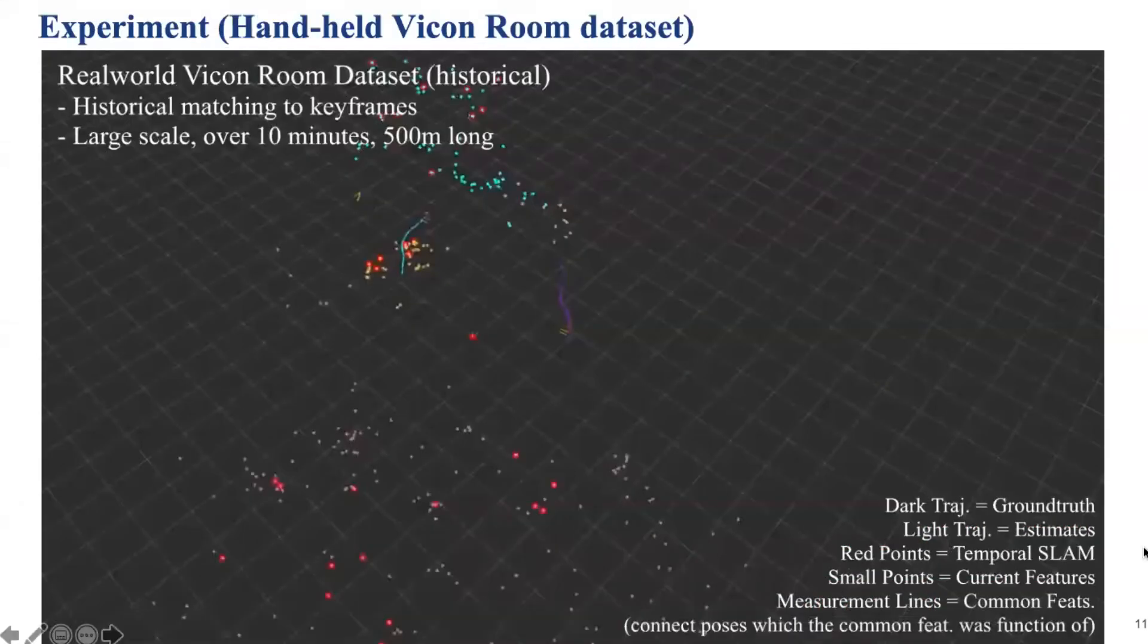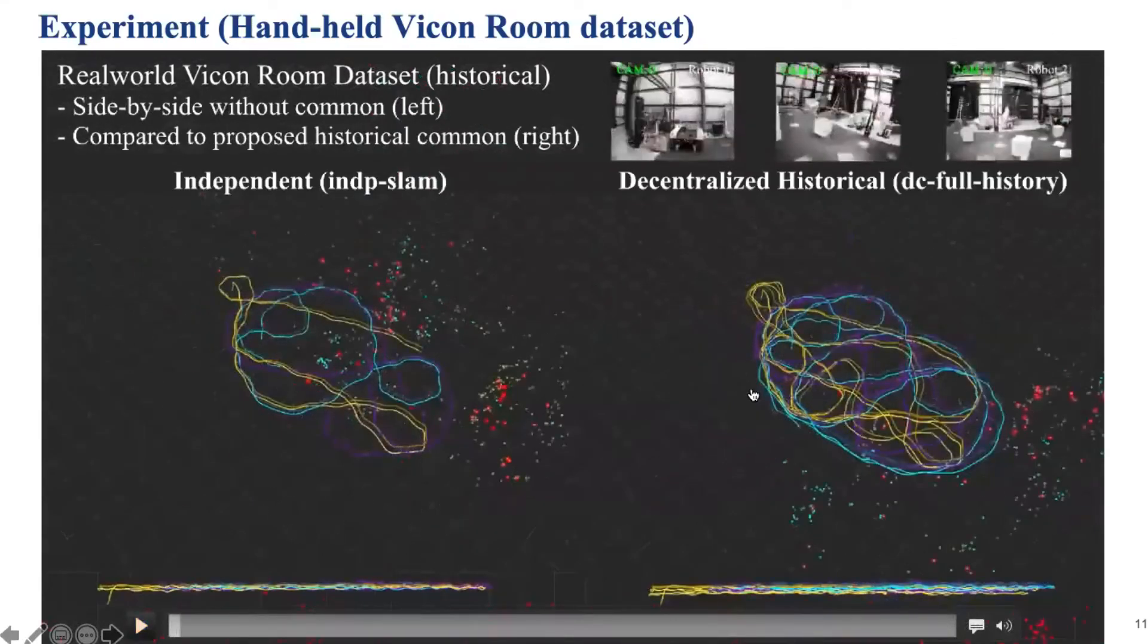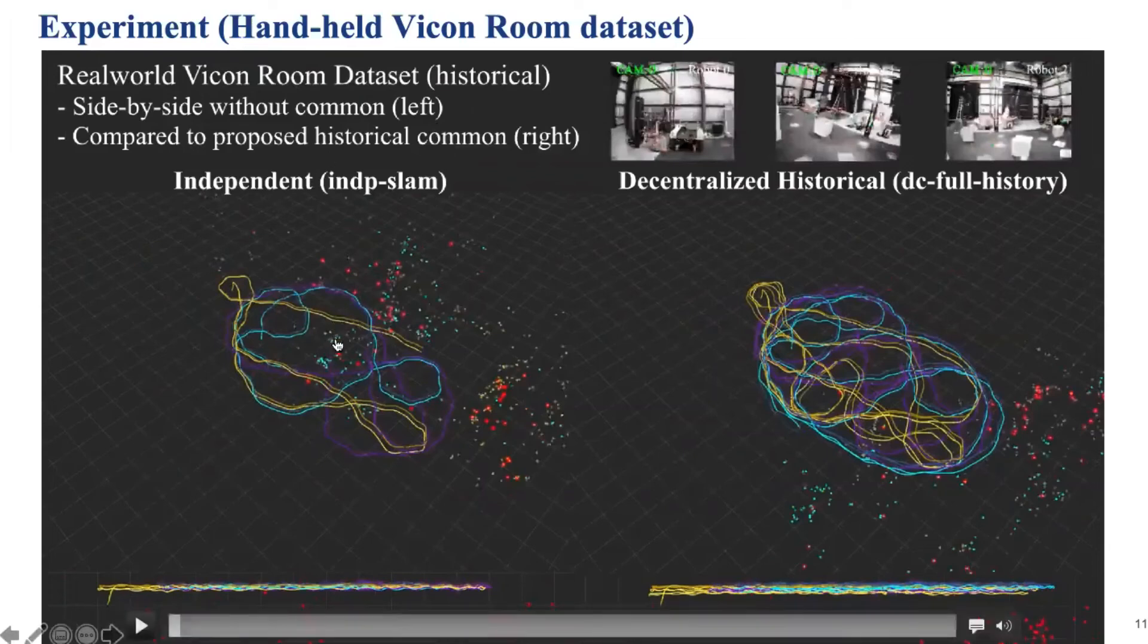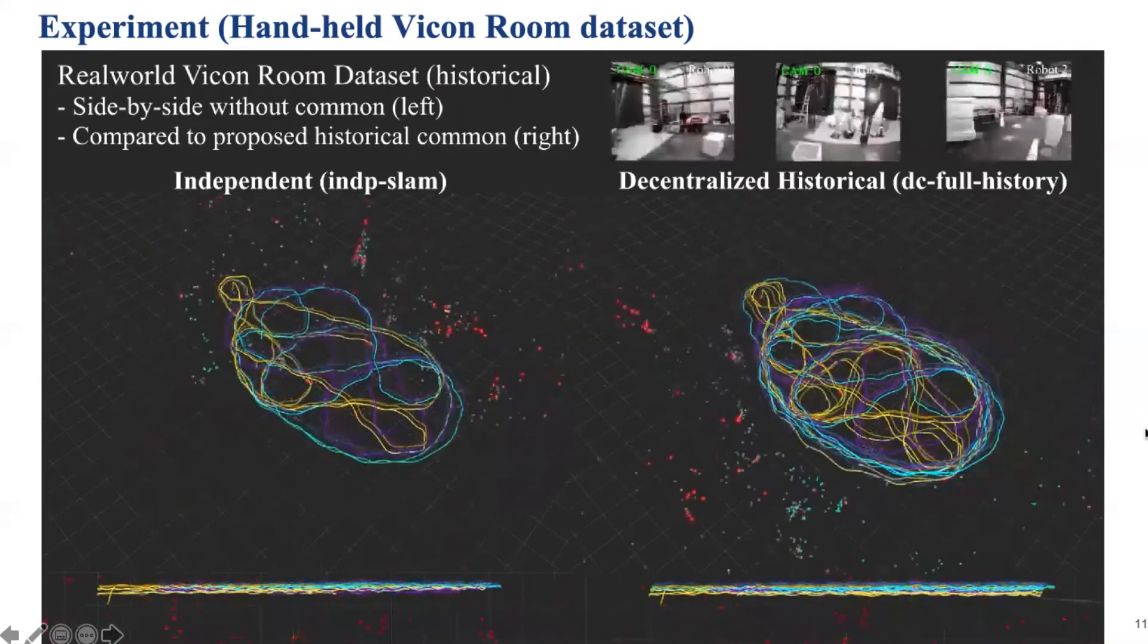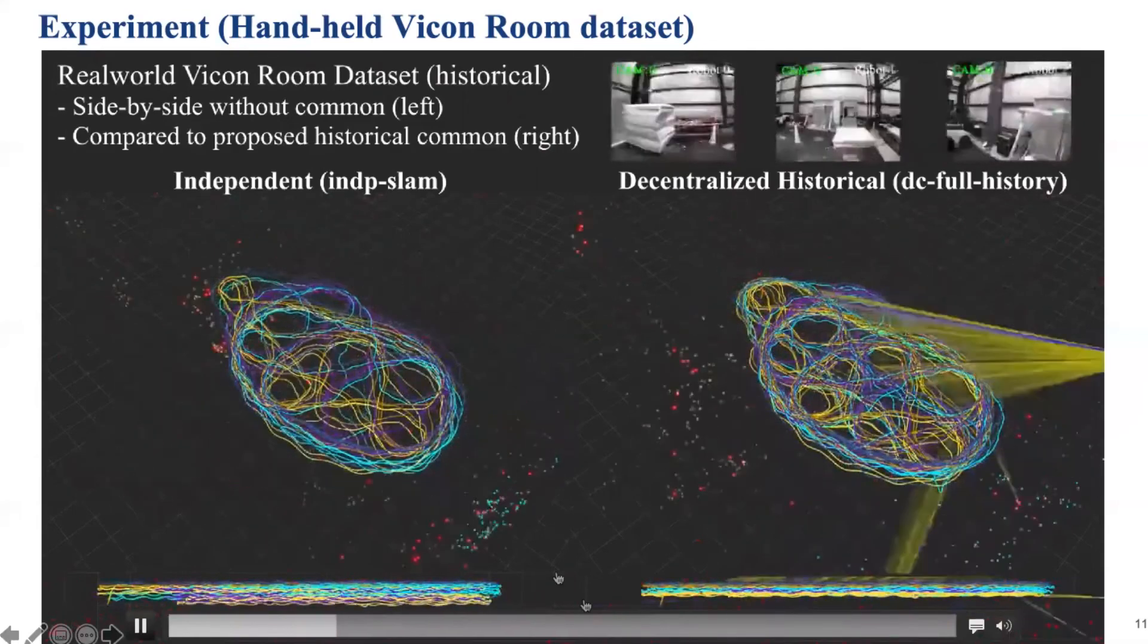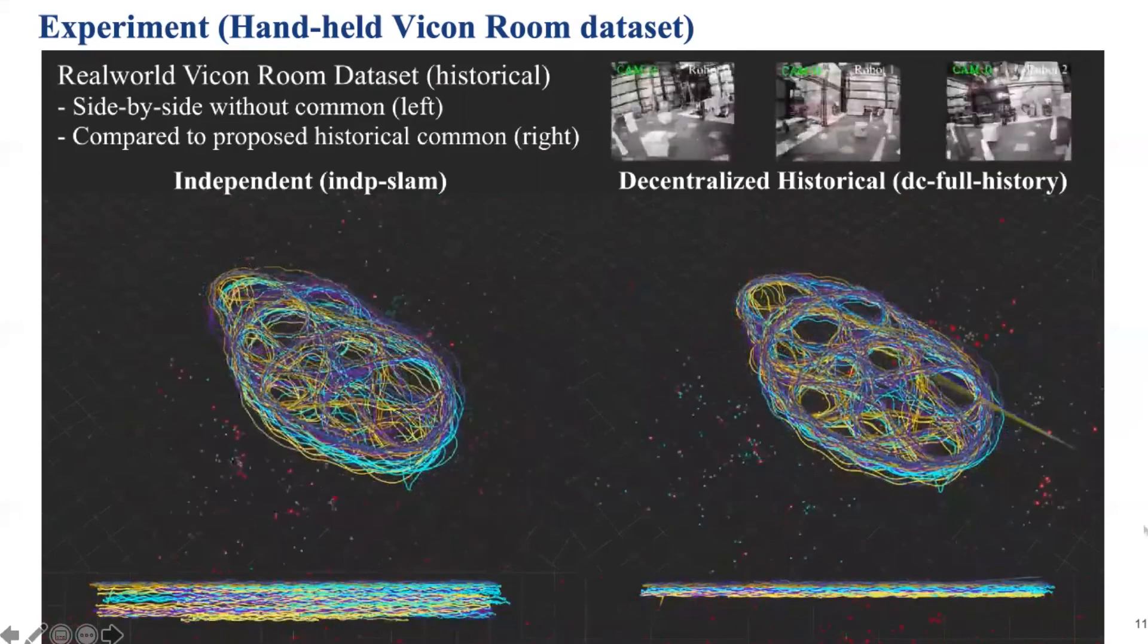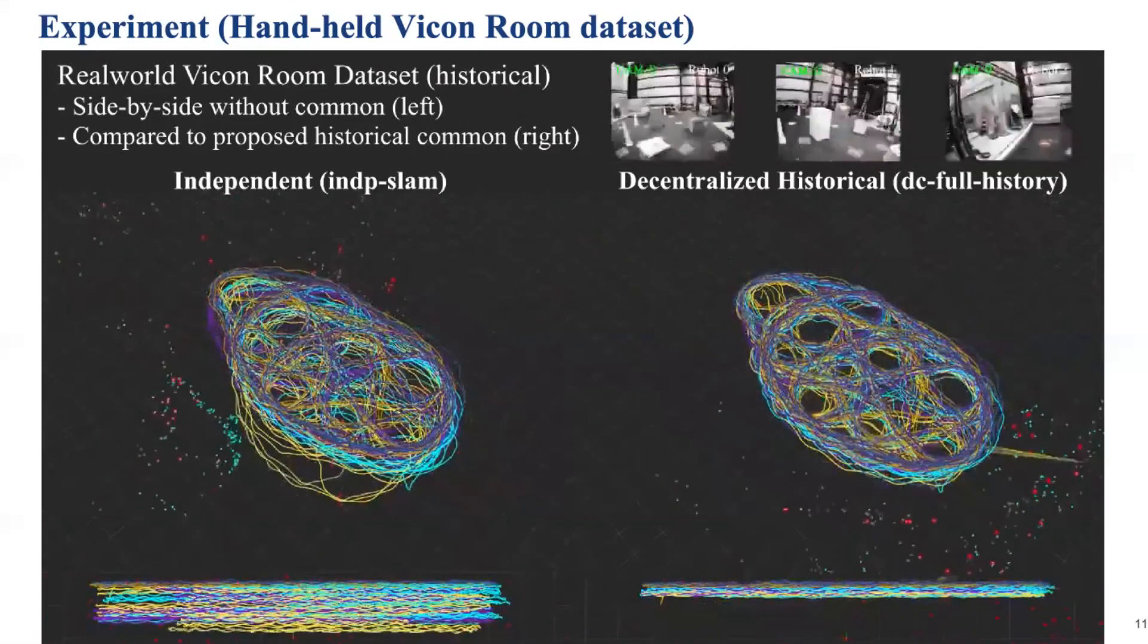We further evaluated the algorithms on our hand-held Vicon room dataset. There are three people walking around the large room. Each trajectory is about 500 meters long. Here we compare two kinds of algorithms, the first independent SLAM algorithm, and the second one is DISC for historical algorithms. Different colors represent different trajectories of people, and the dark one is ground truth from the Vicon system, and the light one is the estimated values. The red points here are the SLAM features, while all the other points are the VIO features. As shown in the middle is the top-down view, and the bottom one are the trajectories in the z-direction. We can see by using common features, we have a huge gain in accuracy, and also we bound the drift in the z-direction.